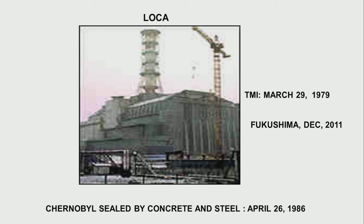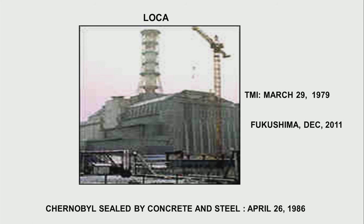In nuclear power plants, loss-of-coolant accidents involve hot metal contacting water, generating hydrogen which then explodes. We had this in Fukushima in 2011; it was almost imminent but did not explode at Three Mile Island on March 29, 1979; and at Chernobyl the whole thing was encased in concrete and steel to prevent further events.